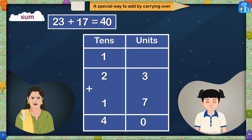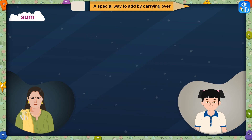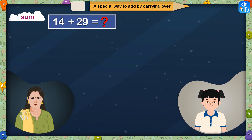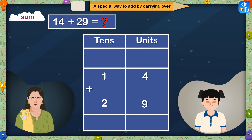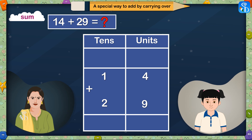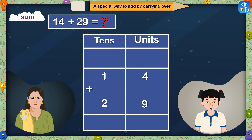In 40, there are 4 tens and 0 units. Now you solve the next one. 14 plus 29 is equal to? How many units and tens are there in 14? 4 units and 1 ten. Correct. How many units and tens are there in 29? 9 units and 2 tens. From where should we start adding? From the units. So, how many units will there be in all? 4 units and 9 units together make 13 units.